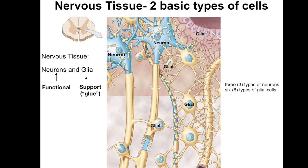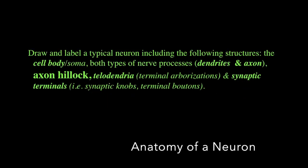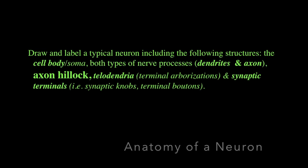Those are the two basic cell types, and within each there are subtypes. There are three types of neurons based on function, and six types of glial cells based on their location and function — we'll cover them later. Neuron anatomy, that is the parts of these complex cells and their functional regions, will be core to everything we're learning about the nervous system, so we'll talk about them first.